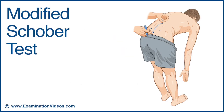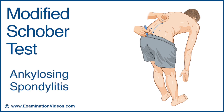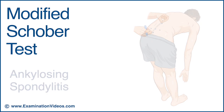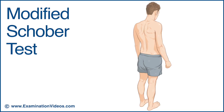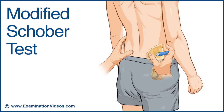The modified Schober test is designed to measure the range of lumbar flexion in patients with ankylosing spondylitis. To perform the test, ask the patient to stand with their feet pelvic-width apart.